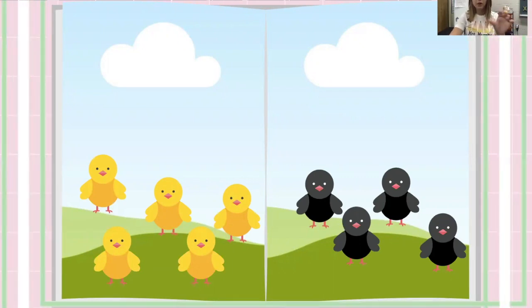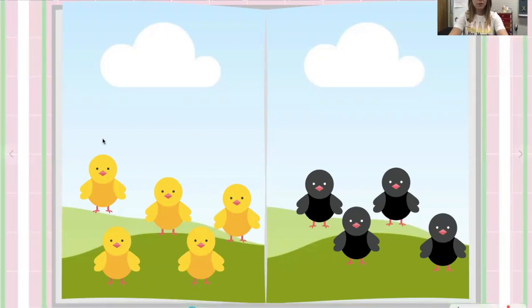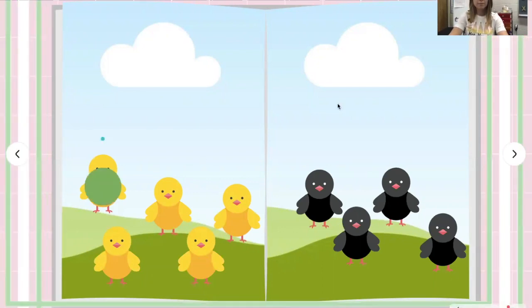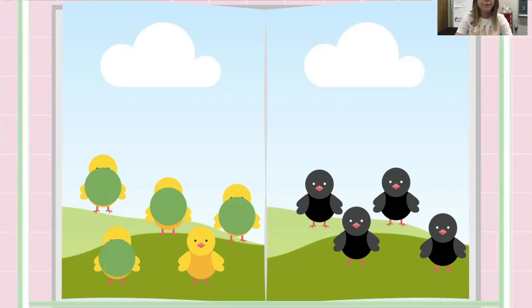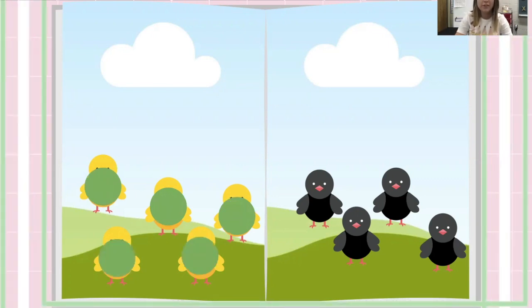So I could put, let's see, one, two, three, four, five green counters. And then that's to match my yellow chicks.